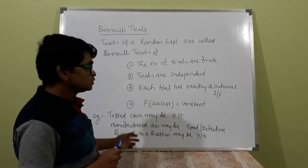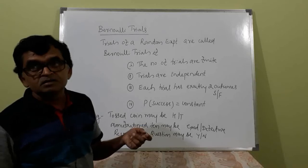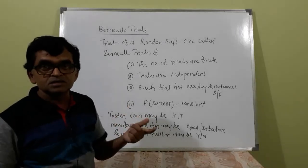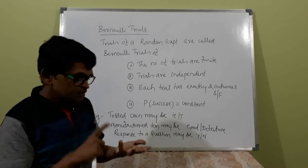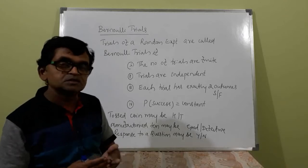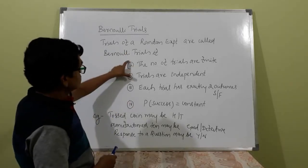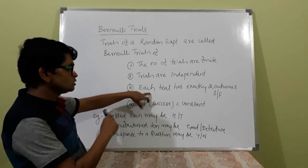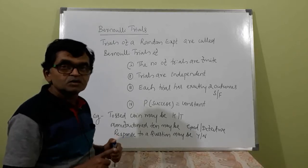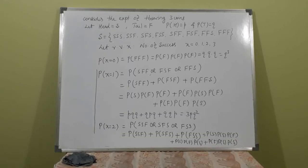The probability of success remains constant. For example, while tossing a coin, the probability of head is one-half and tail is also one-half. While rolling a die, if five or six is defined as success, otherwise it is failure. So the number of trials should be finite, all trials are independent, each trial has exactly two outcomes — either success or failure — and probability of success remains constant.